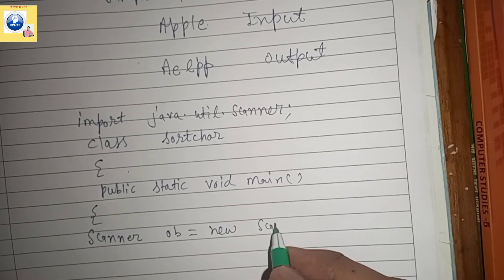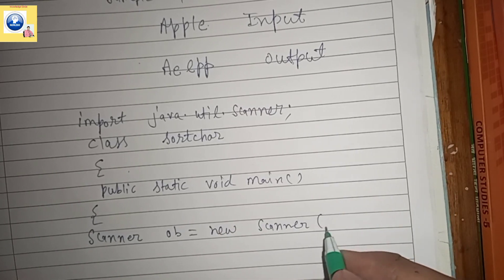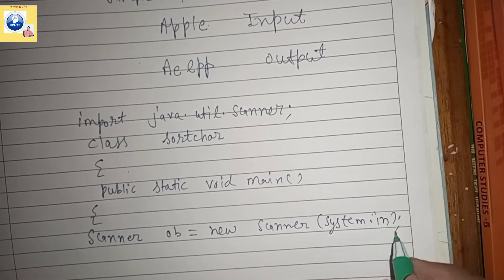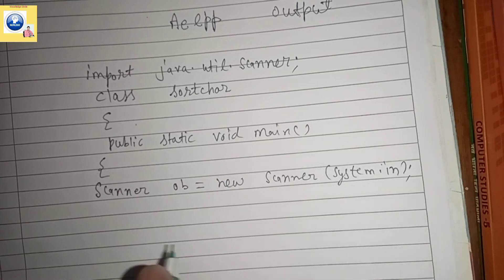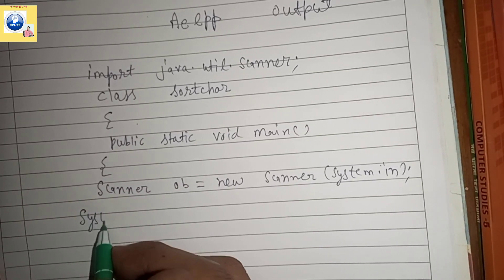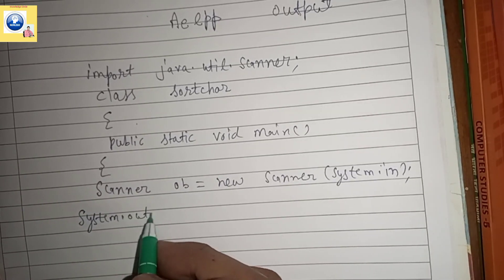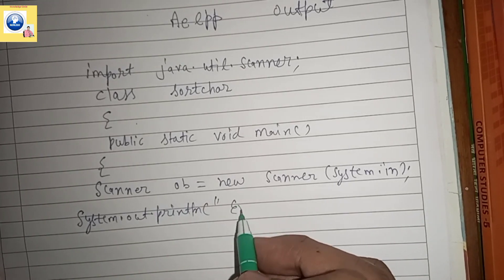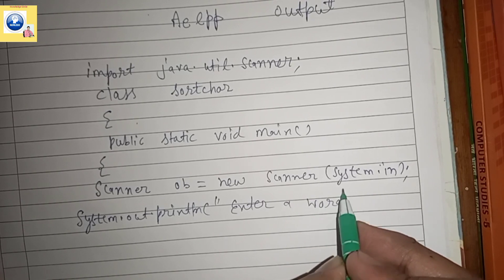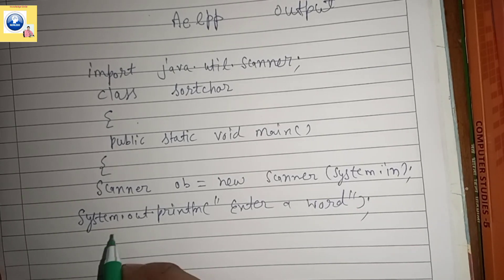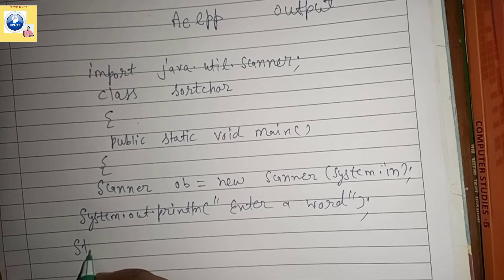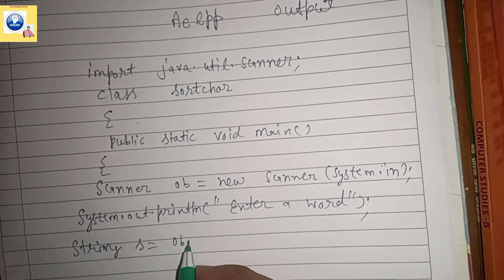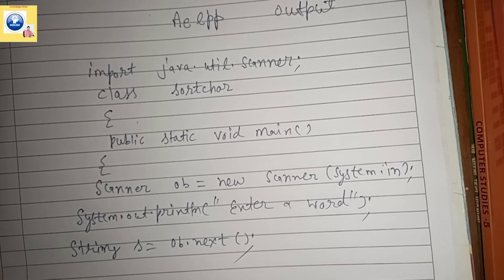The next step is to create the object of the Scanner class. Then we ask the user to input a string by writing 'System.out.println("Enter a word")'. We will store this word in a string variable: 'String s = ob.next()'. The next() method is used to take a word from the user.